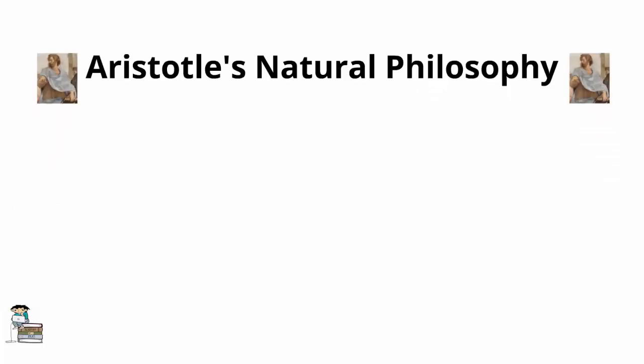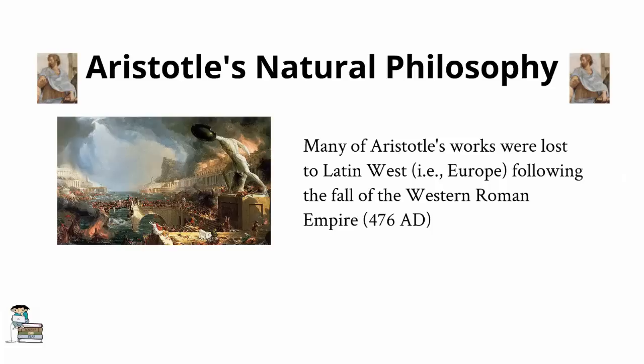Soon after the fall of the Western Roman Empire in the 5th century AD, Aristotle's works on natural philosophy became largely lost to the Latin West. However, beginning in the early 12th century a great translation movement commenced, which saw the reintroduction into Europe of many ancient Greek texts from Arabic and Byzantine sources. Included among these were many of Aristotle's works on natural philosophy.